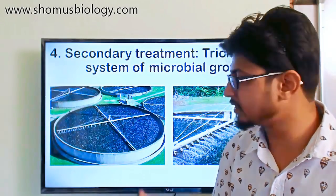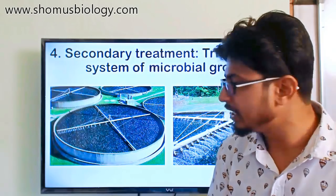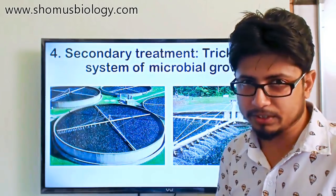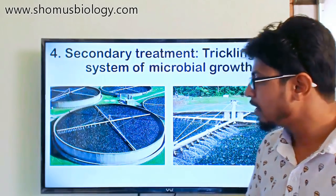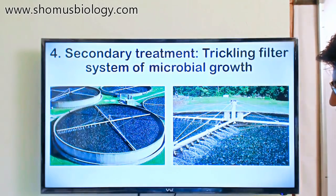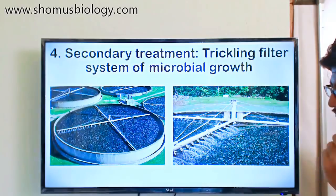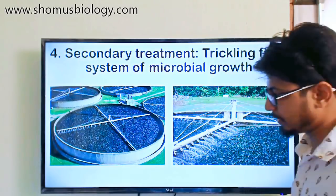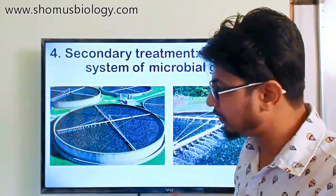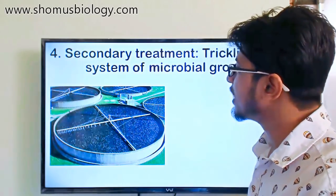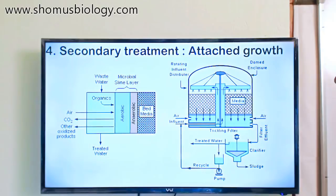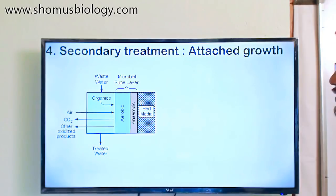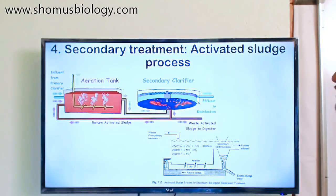Sludge is removed from the bottom and the influent is transported to the next round of the wastewater treatment. The trickling filter system is a very unique and important system used in secondary treatment.